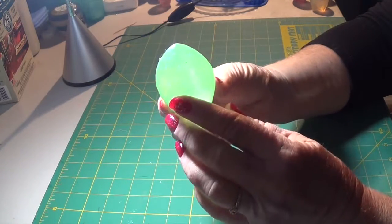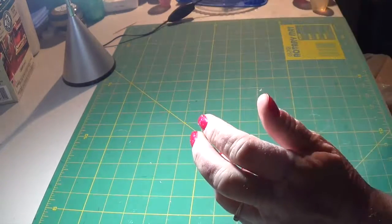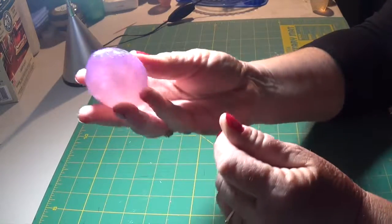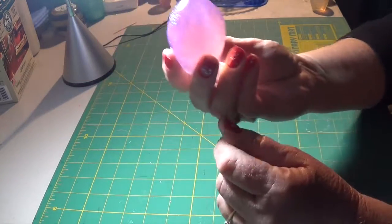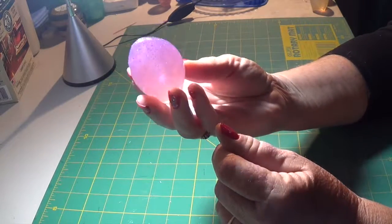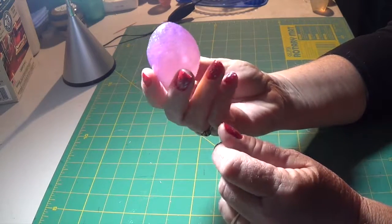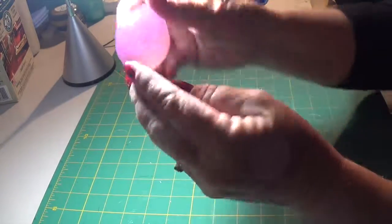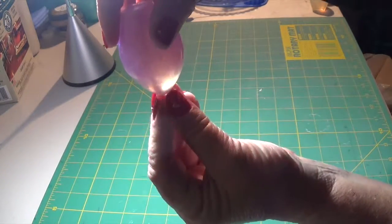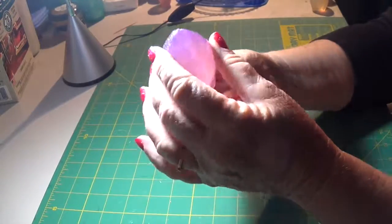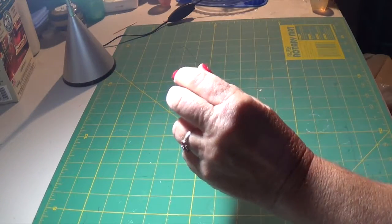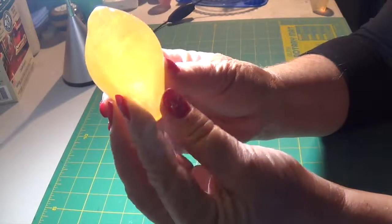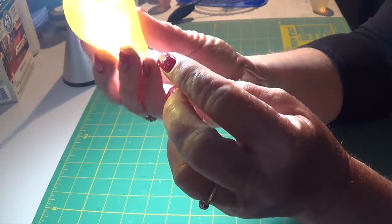To color them I used Pearl X, the powdered pigment and very fine glitter. Because if you use heavy glitter, when it's setting it all comes down to the point and it doesn't look very pretty. So I learned the hard way that you use really fine and the iridescent ones are really good.